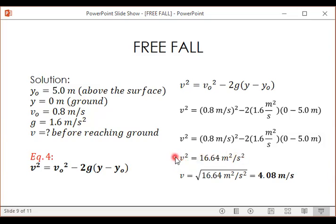So the square root of v² is v, and then we get the square root of this side. Square root of 16.64 meters squared per second squared will be 4.08 meters per second. So we've found the final velocity.